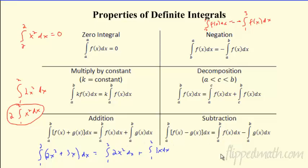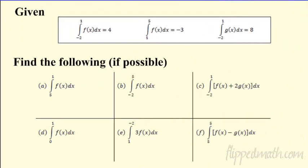Same applies to subtraction — you can break up addition and subtraction. When you have a constant, pull it out front. If your boundaries are in the wrong order, flip them and change the sign. And of course, integrating over an interval of zero width gives zero.